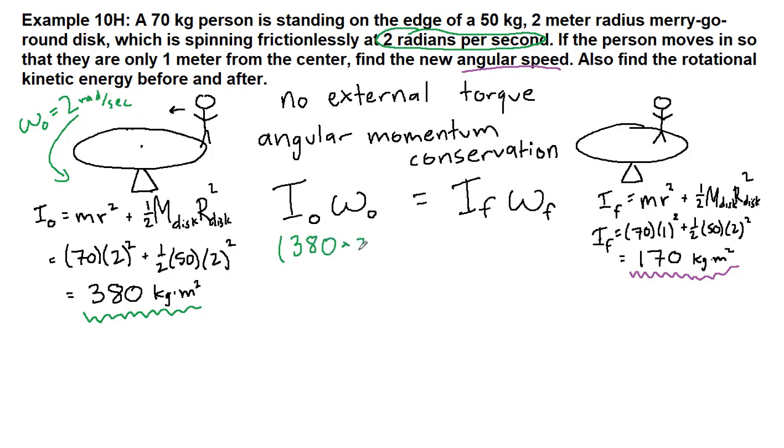380 times 2, and we're equating that with 170 times our omega final. We divide both sides by 170, and what we get is our final answer for this first question: 4.47 radians per second is equal to our final angular velocity.